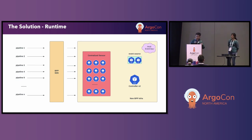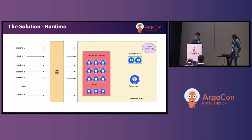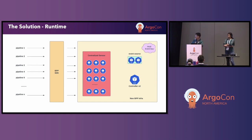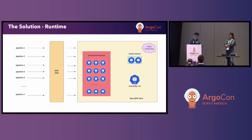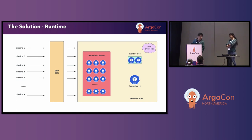We have multiple pipelines. We still provide an SDK to translate the definitions of pipelines into Argo events definitions. But instead of creating a sensor, the new SDK actually creates the sensor metadata — just the specifications of the trigger definitions. And then we have a centralized pool of sensor pods, which is responsible for handling all the processing of the events. Next, I'm going to pass over to Primer, who will go over all the different optimizations that we did.